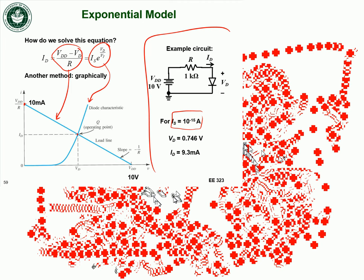This graphical method gives you exact values because you are solving the exponential diode equation directly. You can also figure out what would happen if you change the resistor value, because that just corresponds to a change in the slope of the load line.